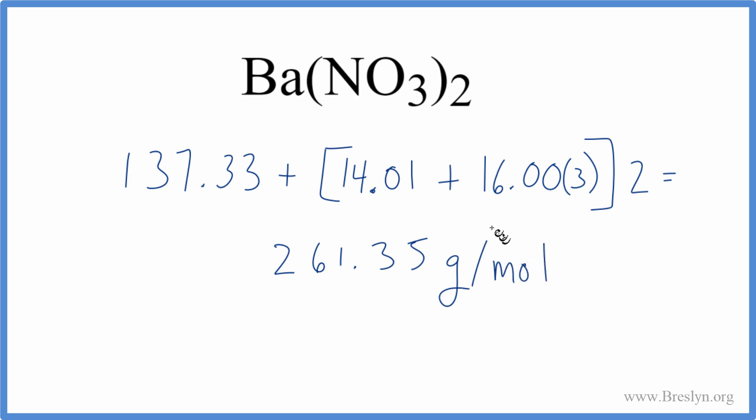Note, you might have gotten a little bit different answer if you rounded to more than two decimal points. If you went out to three decimal points, you might have gotten something like 261.34. But either way, this is how you find the molar mass for barium nitrate, Ba(NO3)2.